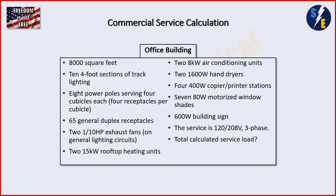Here is our office building. We have an 8,000 square foot building, ten four-foot sections of track lighting, eight power poles serving four cubicles each with four receptacles per cubicle, and 65 general receptacles. We have two one-tenth horsepower exhaust fans on the general lighting circuits, two 15 kW rooftop heating units, two 8 kW air conditioning units, two 1,600 watt hand dryers, four 400 watt copier/printer stations, 780 watt motorized window shades, and a 600 watt building sign. The service is 120/208 volt three-phase.